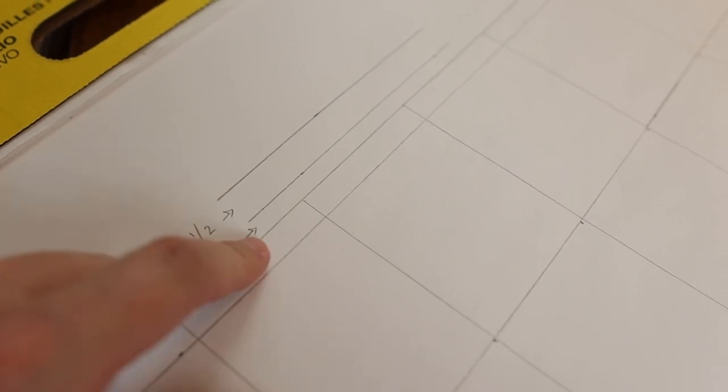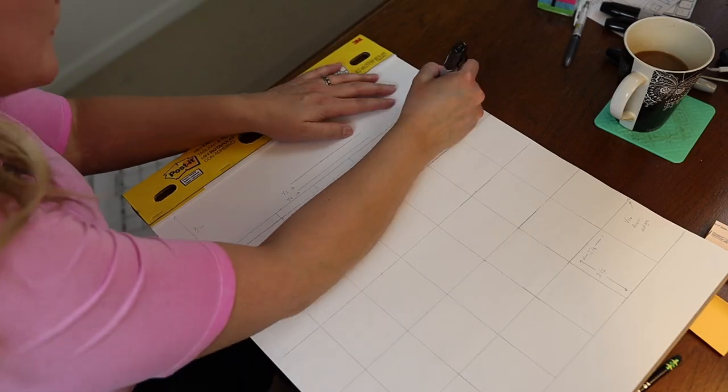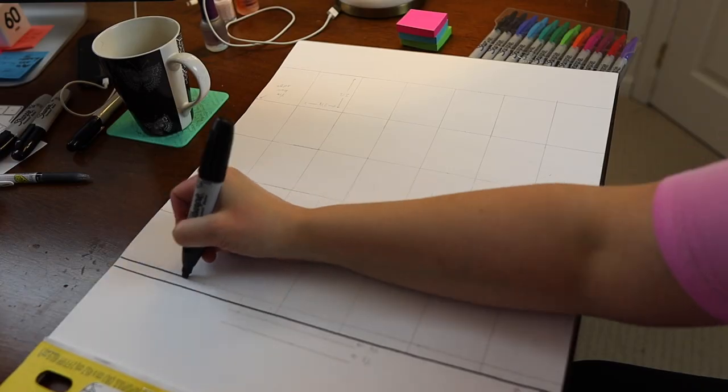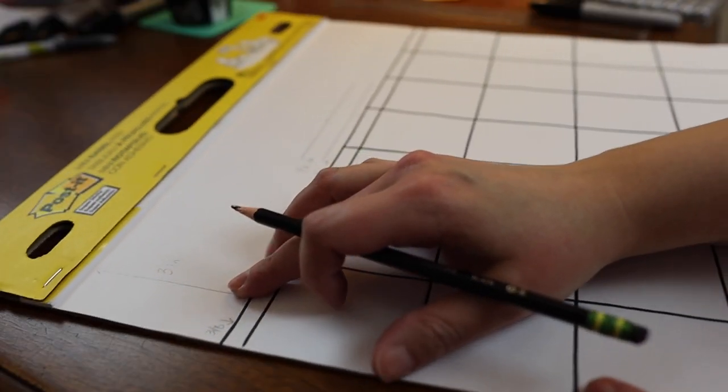So this is our template here. Now we're going to use a nice new black Sharpie to go over our lines. Now since this one here has all of my measurements on it, I'm going to use this one for the month of December for next year.